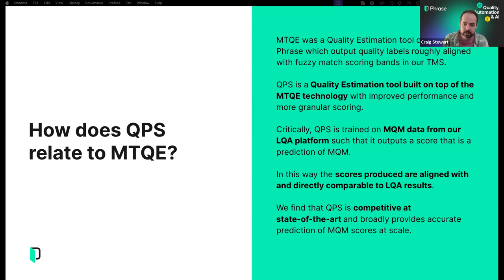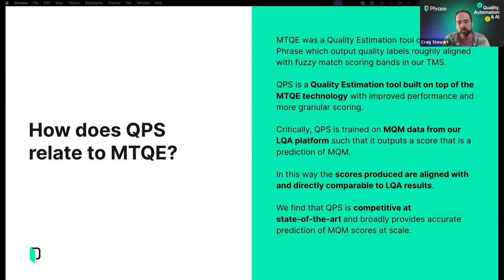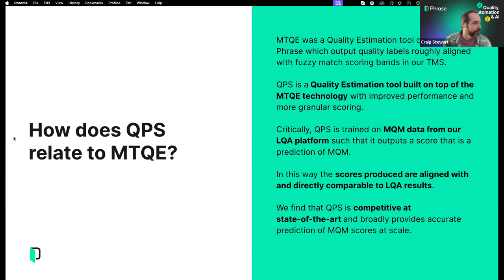To provide alignment and unification of the framework across the platform — just to mention performance briefly: we've carried out experimentation internally suggesting that QPS is competitive as a state-of-the-art quality estimation tool and broadly provides accurate prediction of MQM scores at scale. I'll pass you back across to Dan now, who will explain where it sits in the product suite.